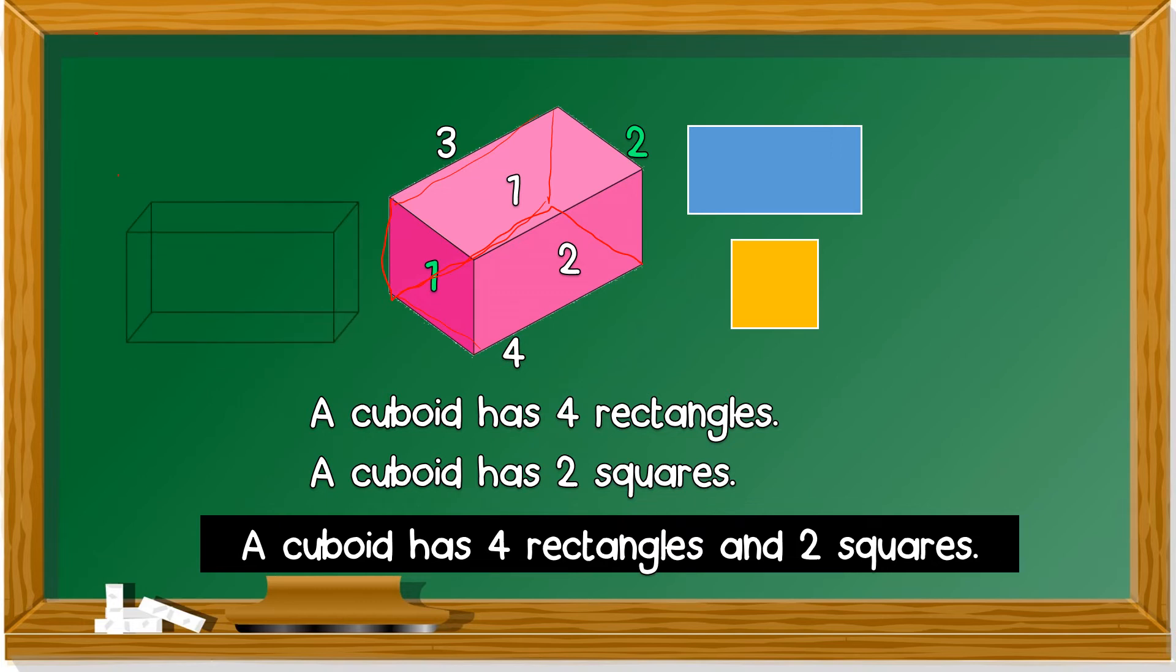Shall we look at it again? Okay, so 4 rectangles. In front we have 1, 2 on top, 3 bottom, at the back we have 4. So there are 2 squares. This is 1 square. This is another square.